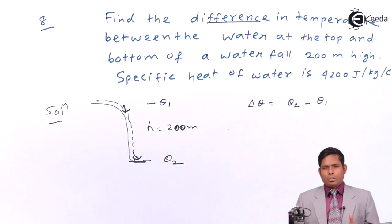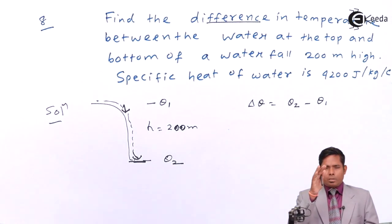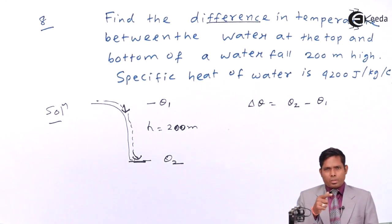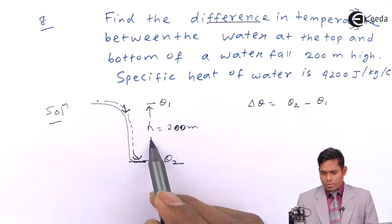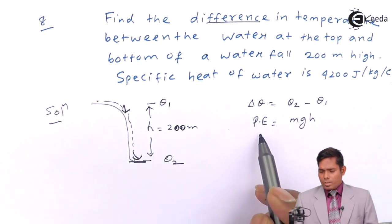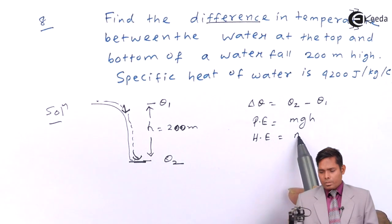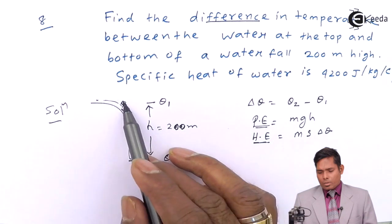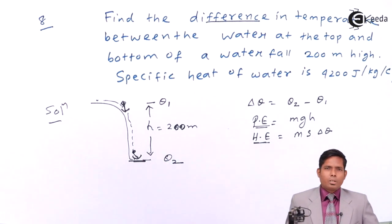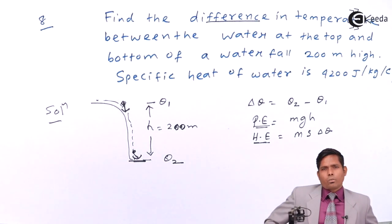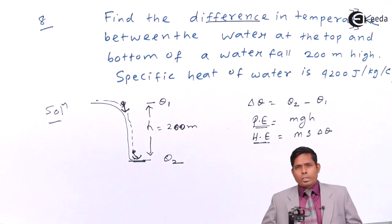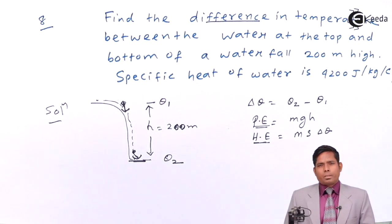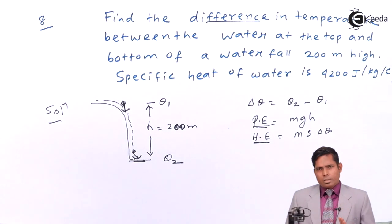Instead of finding the kinetic energy of the water, it is better to find the change in potential energy. The potential energy at the top is mgh, and that potential energy is converted to heat energy which is m·s·Δθ. We assume that no other forms of energy loss occur — though some potential energy could convert to light or sound — but ignoring those factors, we consider that all the potential energy converts to heat.